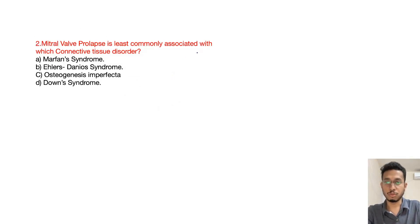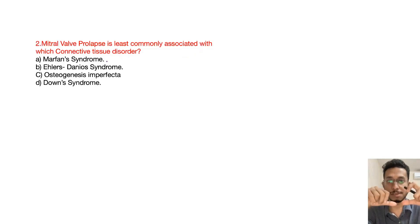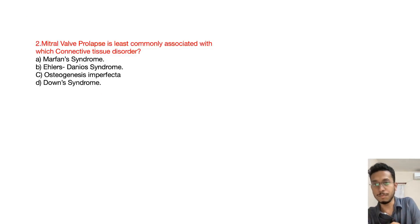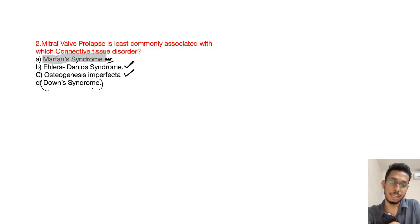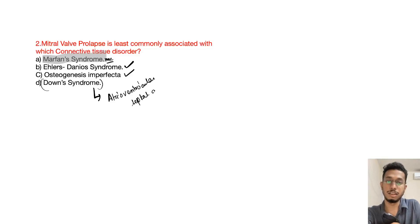The next question: mitral valve prolapse is least commonly associated with which connective tissue disorder? There is myxomatous degeneration of the mitral valve, more commonly affecting certain congenital connective tissue disorders. The most common associated condition is Marfan disease. It is also involved in Ehlers-Danlos syndrome and osteogenesis imperfecta, but it is not reported with Down syndrome. The answer here is Down syndrome.